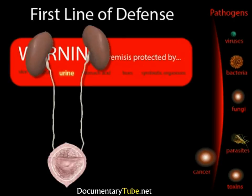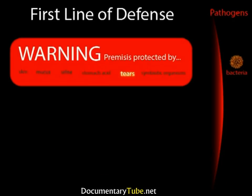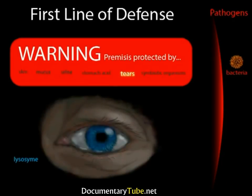Urine is also a very important first line of nonspecific immunity. Any opening to the outside is a potential place for infection, and urine washes out the tract that leads to the outside, helping fight off organisms attempting to enter the body that way. The acid in gastric juice kills most pathogens—thus, swallowing our own mucus helps kill pathogens trapped in it. If we eat food that contains bacteria, as most food does, the gastric juice in our stomach kills those bacteria before they can do any damage.